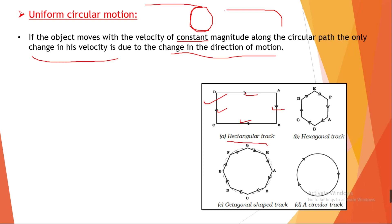If we take a hexagonal shape, we can change direction at A to B, B to C, C to D, D to E, E to F, and F to A — that is 6 times. Here we can make a circle-like shape. Every time our direction is changing. For a hexagon it changes 6 times. If we take an octagonal shape, the direction will change 8 times.